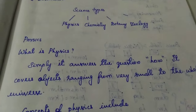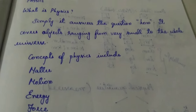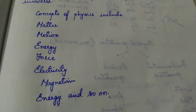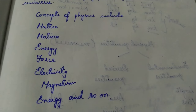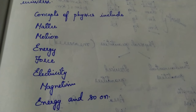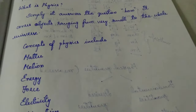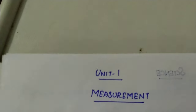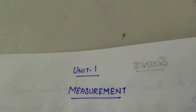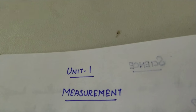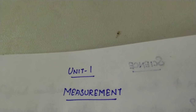Some of the basic physics concepts are matter, motion, energy, force, electricity, magnetism, measurement and so on. Now I am going to cover the first unit of sixth standard physics which is measurement. What is measurement?